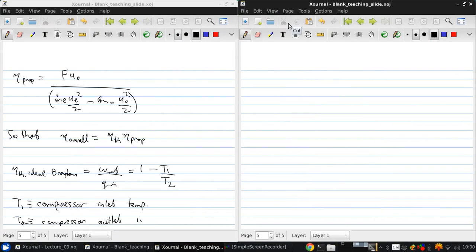Recall our equation for thrust. F is m dot e ue minus m dot 0 u0 plus pe minus p0 times Ae, and remember that this is typically small. And if we think about this, m dot e must just be equal to m dot 0 plus the fuel mass flow rate m dot f.